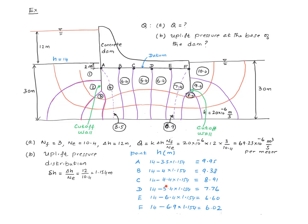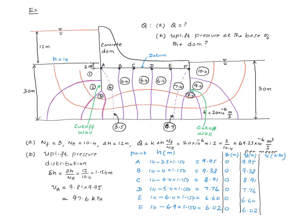You repeat this process to calculate the total head at all of these points. Since we have taken the datum right at the base, the elevation head for all of these points is 0, and therefore the pressure head works out to be exactly equal to the total head. Multiplying the pressure head by the density of water gives the pore pressure. For example, for point A: 9.81 × 9.95 = 97.6 kPa. You repeat that for all of these points.